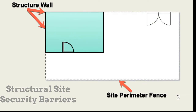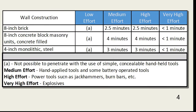Sites are often designed with one or more structure exterior walls used as part of the site perimeter barrier. In this example, the organization uses two building walls as part of a fence barrier. One consideration when a structure forms part of a site perimeter is the construction of the exterior walls. These considerations also apply when a completely internal structure is a medium or high physical security zone. These are not the only options — I provide this information only to demonstrate how wall construction determines penetration times.